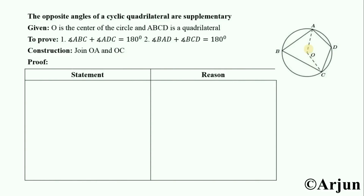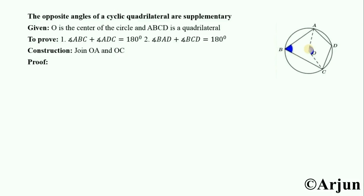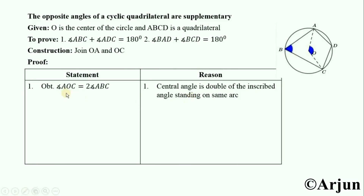The first statement is: angle AOC equals two times angle ABC. Here AOC is an obtuse angle, standing on arc AC, and angle ABC is an inscribed angle also standing on arc AC. Angle O is the central angle standing on arc AC and angle B is the inscribed angle standing on arc AC. By the relation between inscribed angle and central angle, angle AOC equals two times angle ABC. The reason is: the central angle is double the inscribed angle.